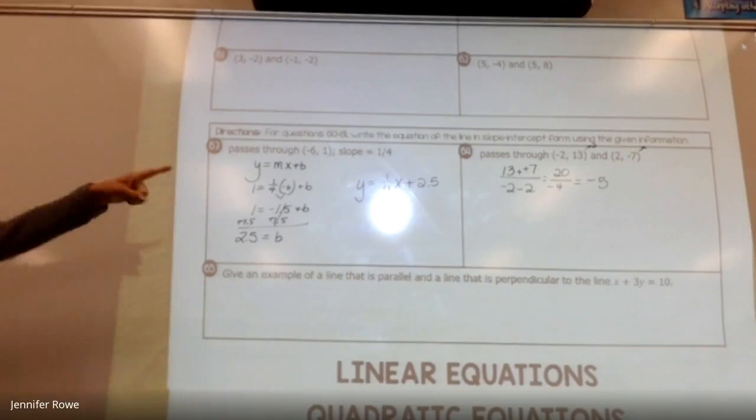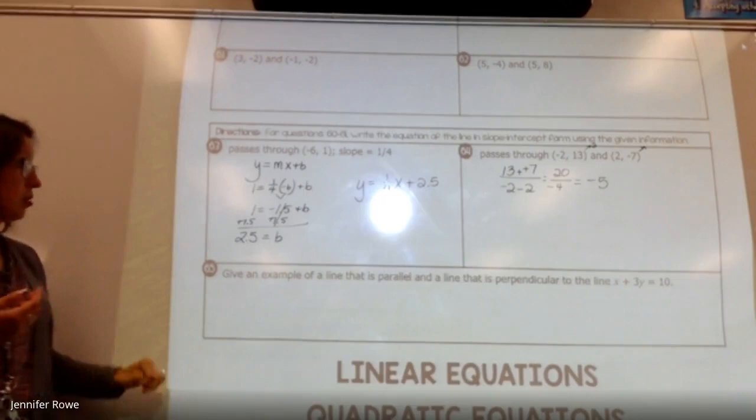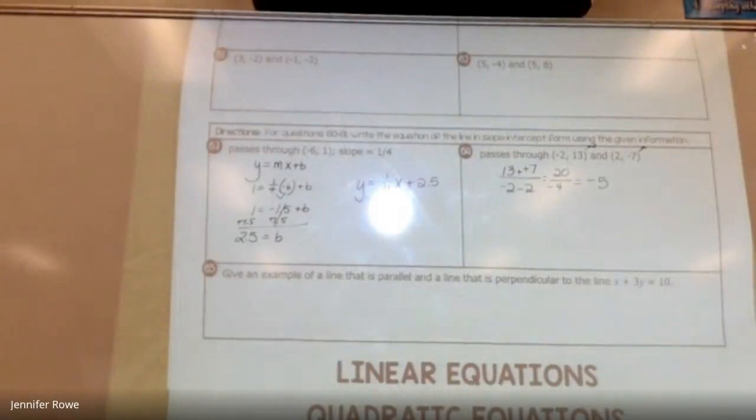I'm going to call this point 2. I'm going to call this point 1. So 13 minus negative 7 over negative 2 minus 2. That's keep change, change. That's 20. That's negative 4. I got negative 5 for my slope. Did somebody actually get it or are you just copying it? Yeah. And then you just go through and do the same thing we did over here. That's your slope. Do I care which point you plug in? No.